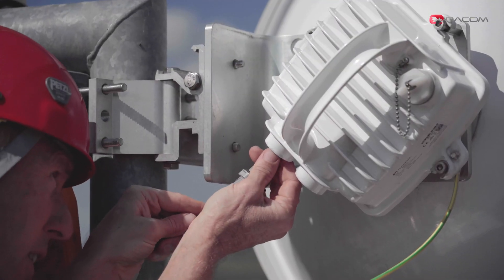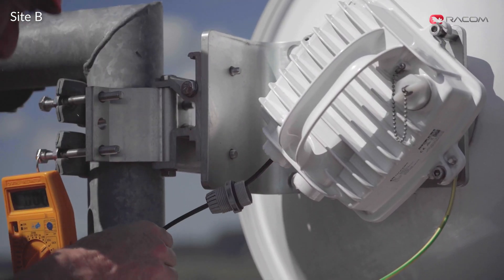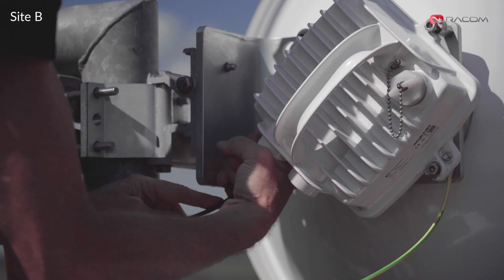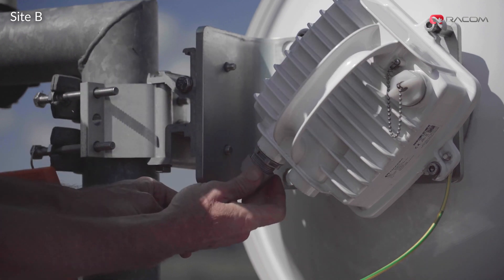In the meantime, Jiří does the same on site B, installing the bracket, antenna and ray unit, grounding and connecting the Ethernet PoE cable.